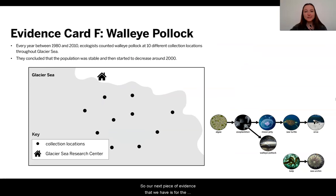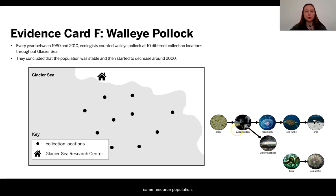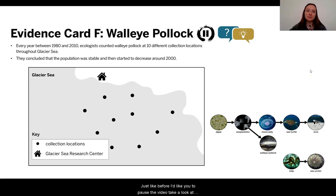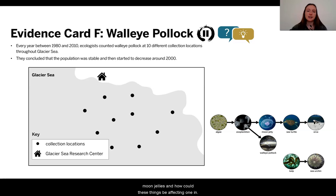Our next piece of evidence is for the walleye pollock. As we know, the walleye pollock are in competition with the moon jelly because they have the same resource population. Just like before, I'd like you to pause the video, take a look at the evidence for yourself. What is it telling you? Is it strong evidence? How is the walleye pollock related to the moon jellies, and how could these things be affecting one another?